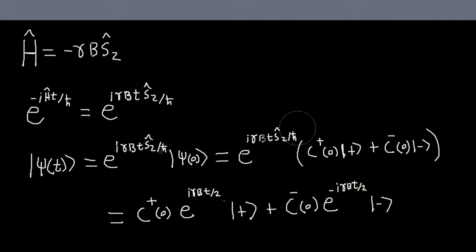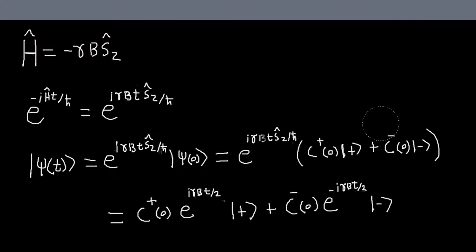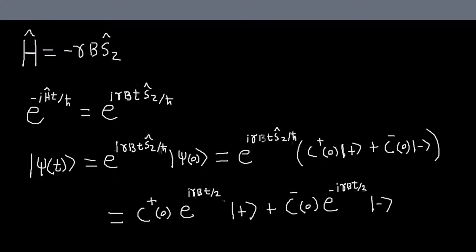This is easy to work out because, from the last linear algebra video, I have this operator which is a function of Sz, and I have my state expanded in terms of the eigenkets of Sz. These states will be eigenstates of this operator with eigenvalue of just this function evaluated at the eigenvalue of the corresponding state. So when I act this operator on plus, Sz will be h-bar over two, so h-bar will cancel, and I'll get this.